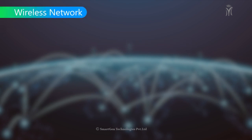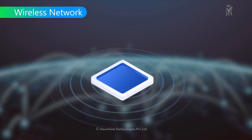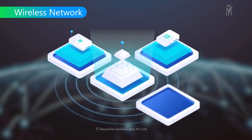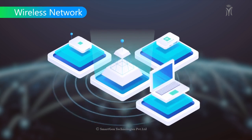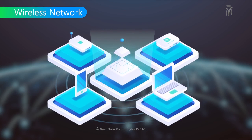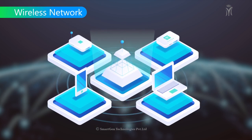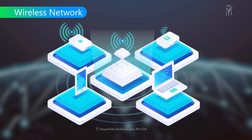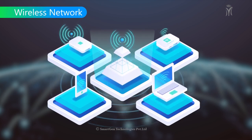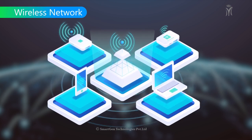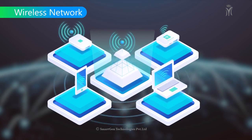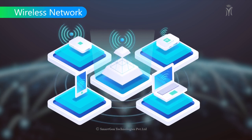A wireless network allows you to connect one or more computers or other devices such as mobiles, laptops, and printers, so that you can share files and access the internet. It uses radio signals.